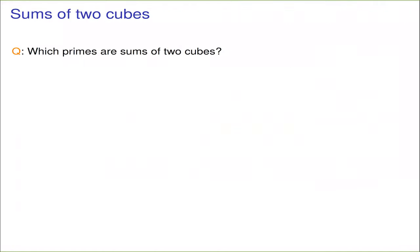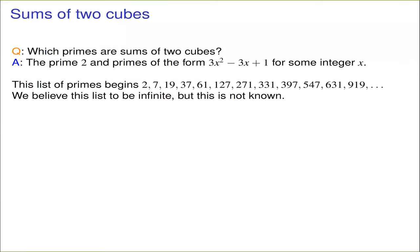So what do we know? What can we say about the degree three problem? Well, if we only have two variables — we're given an integer and we want to know, can it be represented as the sum of two cubes? — this we know how to solve. Let's first consider which primes can be written as the sum of two cubes. The answer is the prime two and all primes of the form 3x² − 3x + 1. I'll show where that comes from in a moment.